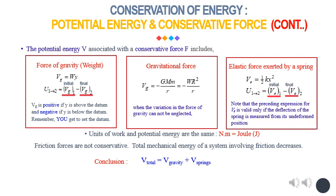The units of work and potential energy are the same. Friction forces are not conservative — the total mechanical energy of a system involving friction decreases. Overall, there are two major components to potential energy V commonly encountered in mechanical systems: the potential energy from gravity and the potential energy from springs or other elastic elements.